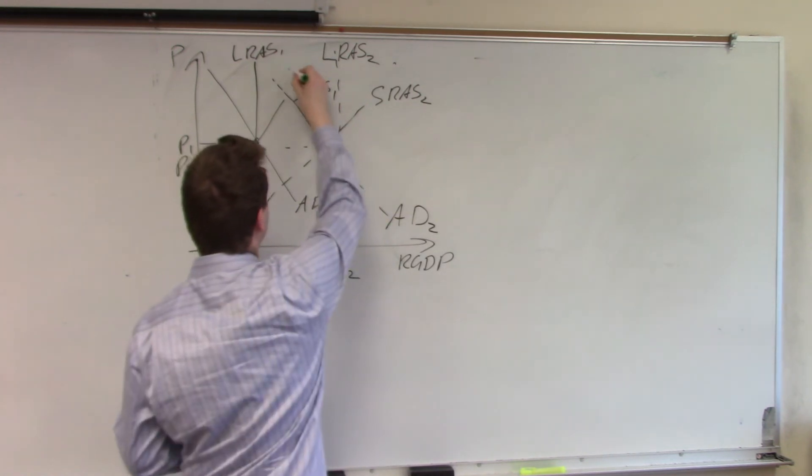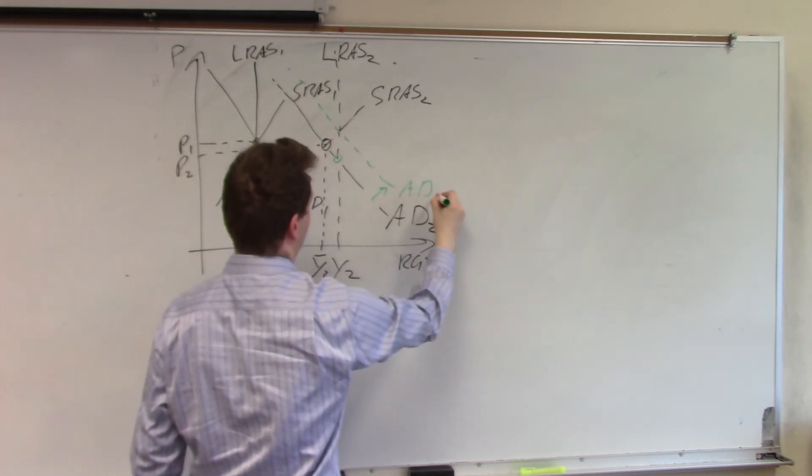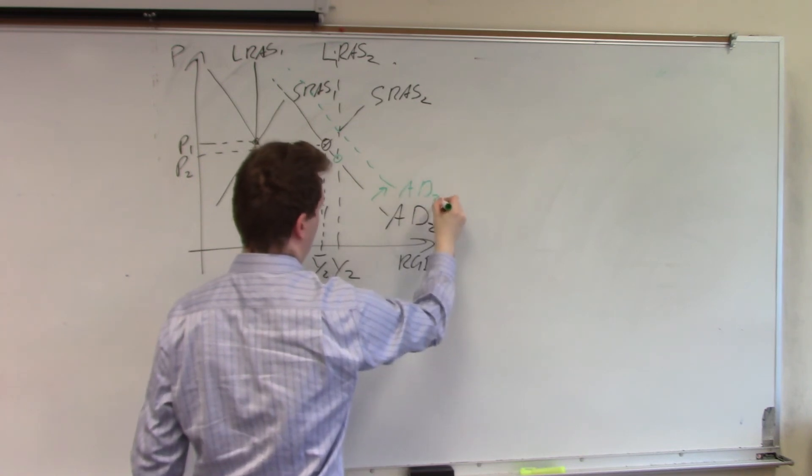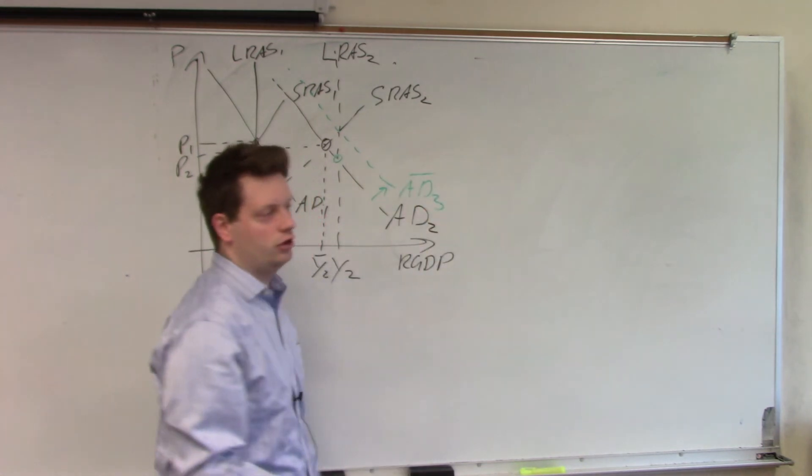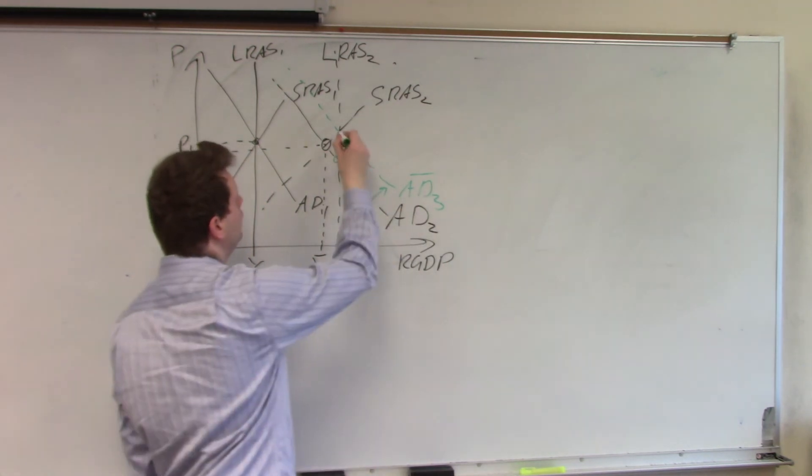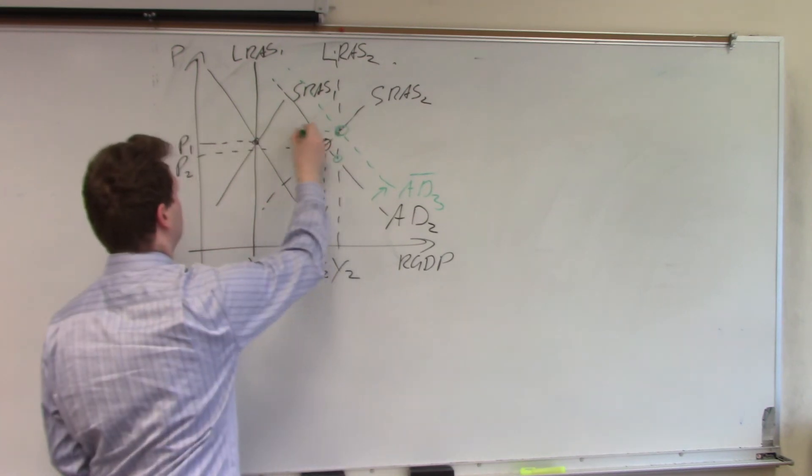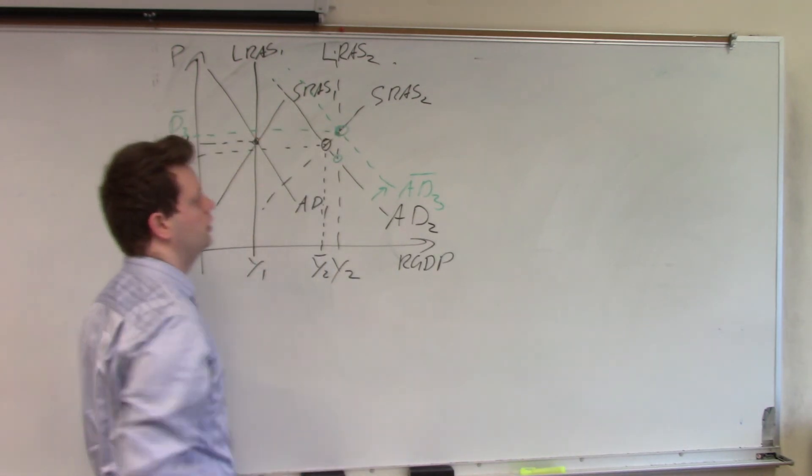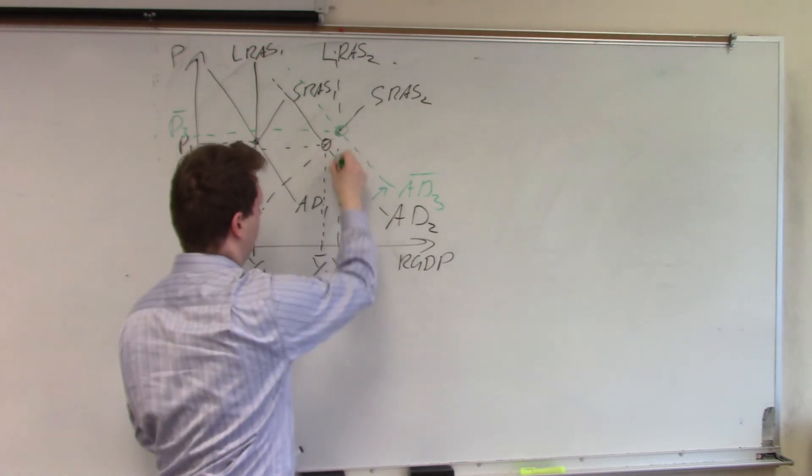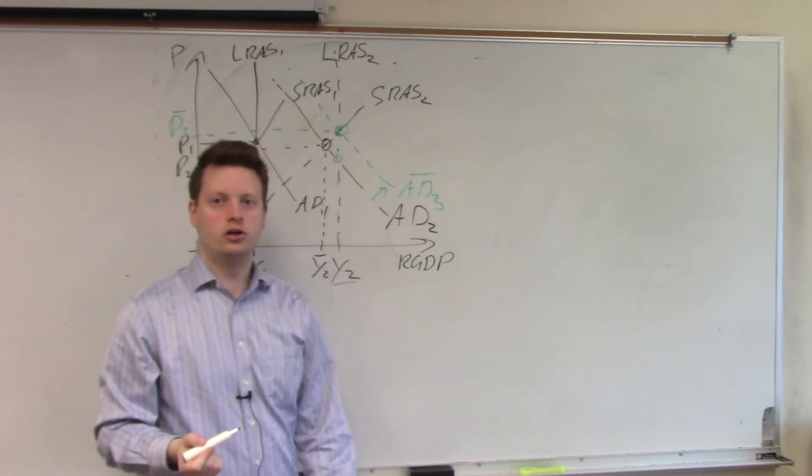And let's call this new aggregate demand AD bar 3. And we will end up at this equilibrium up here, which will have higher prices than the initial state, but the same output level in year 2.